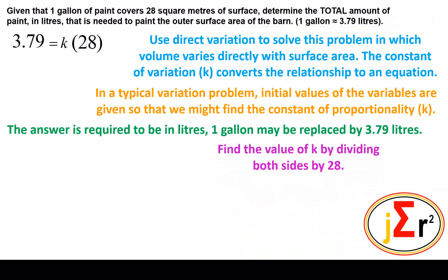Find the value of k by dividing both sides by 28. We have an equation and k is our unknown. It is accompanied by 28 on the right-hand side in a multiplication relationship. We will therefore eliminate this 28 in order to find the value of k by dividing by 28, which is the opposite of multiplication.